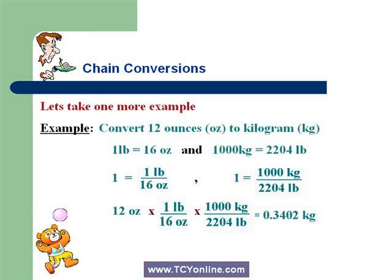Simply multiply 12 by these two fractions. So we finally reach 0.3402 kilograms. So we can say that 12 ounces equals 0.3402 kilograms.